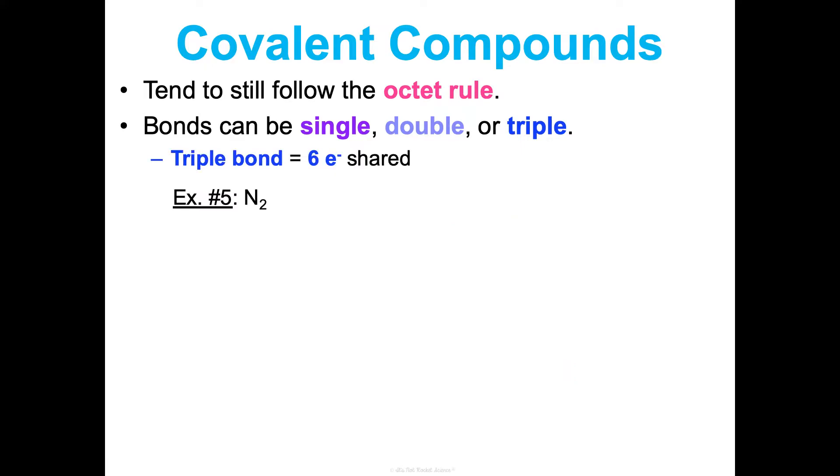And then a triple bond is just going to be six electrons are shared. So we see this when we look at N2, they share one pair, two pairs, three pairs at six electrons total. And we get that triple bond there.